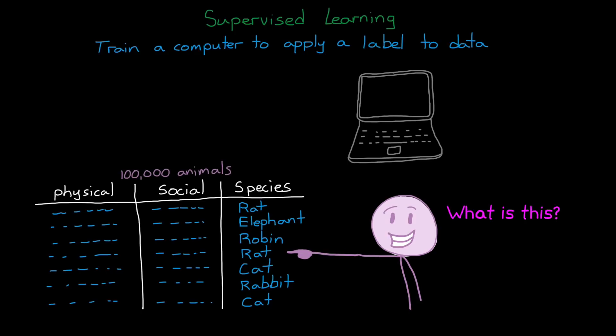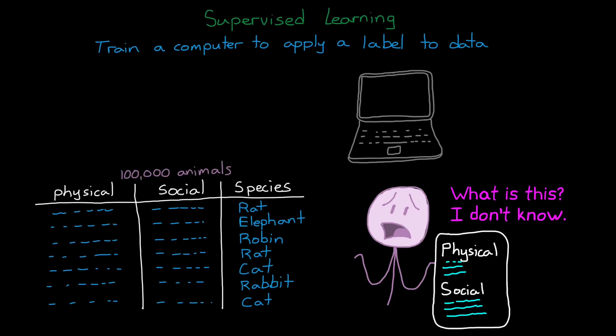And if we had enough training data to get a reliable model, we could then send through the input features for a new animal, one that we don't have labeled, and our trained model would apply the most probable species label to it.